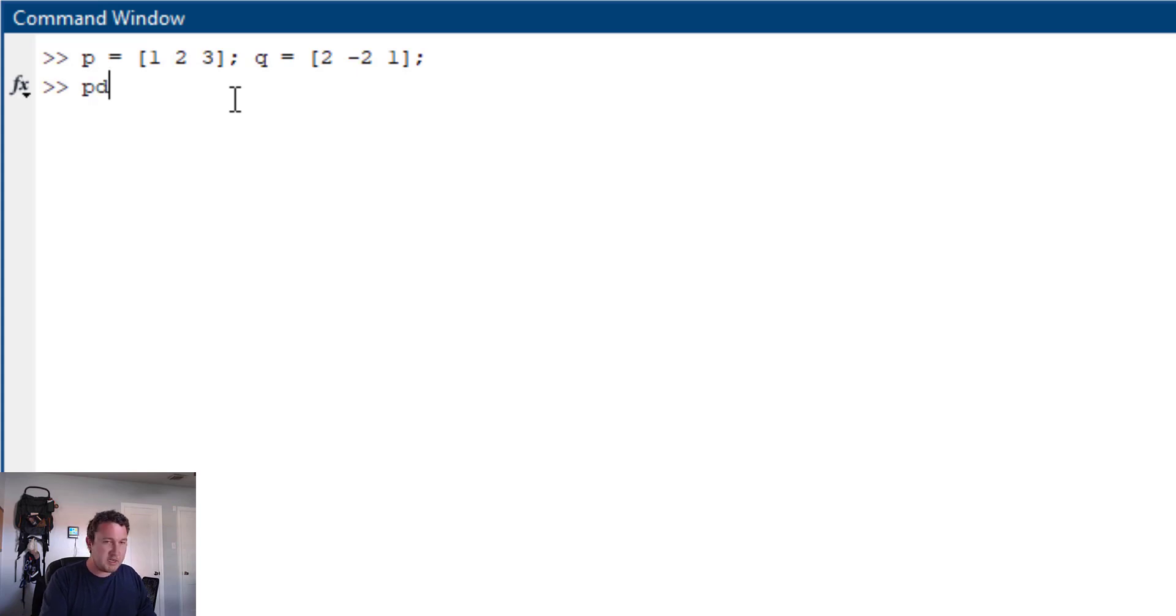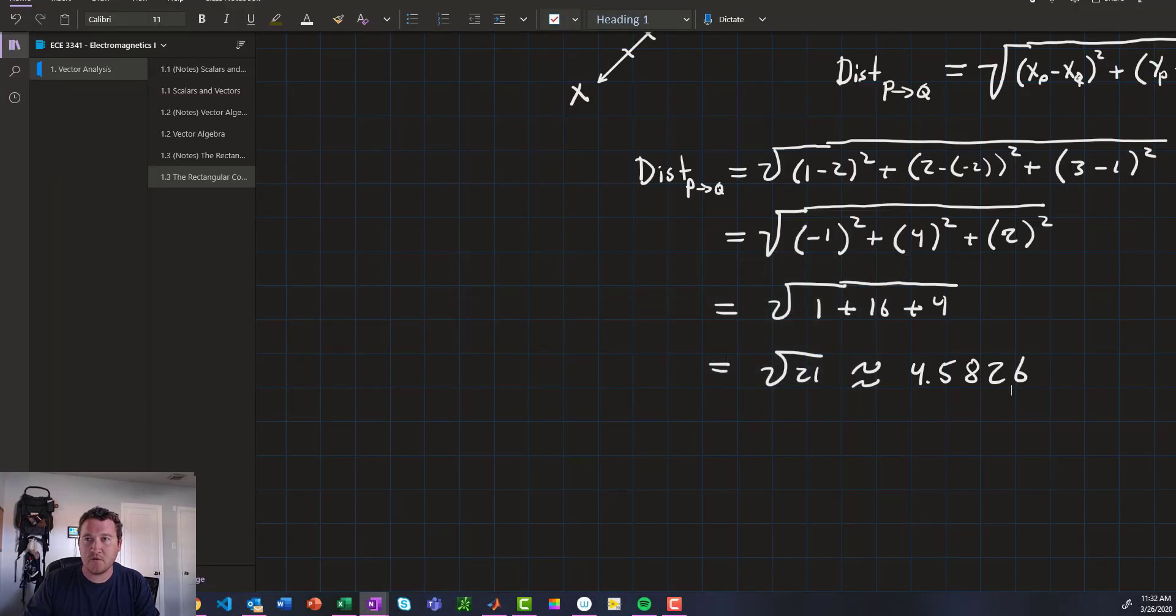And we'll set the distance. The function we can use here is called pdist, and we'll just have p semicolon q, and there we go. There's our answer, 4.5826. So, here's how we can use MATLAB to calculate the distance between two points in three-dimensional space.